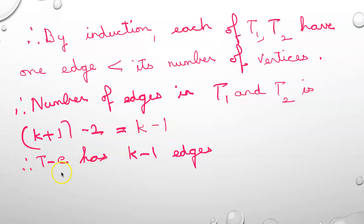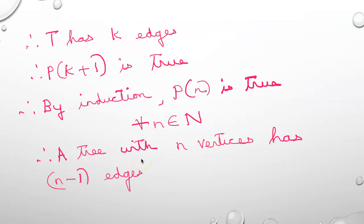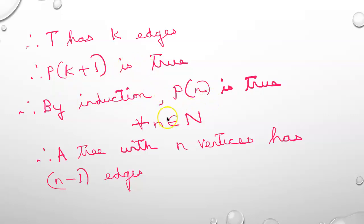That means T-E has k-1 edges, so T has k edges. Therefore P(k+1) is true. Hence by induction P(n) is true, and a tree with n vertices has n-1 edges.